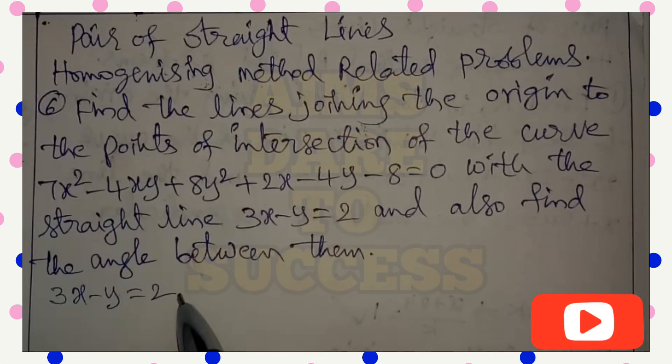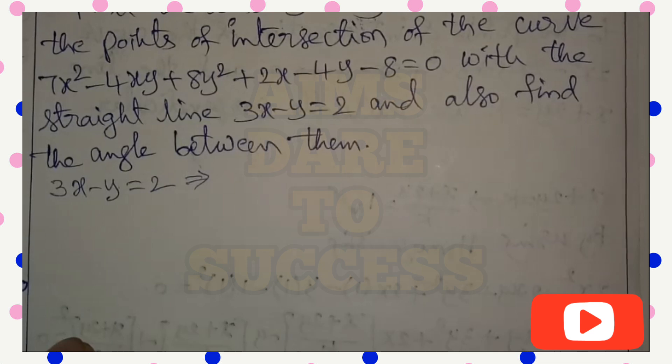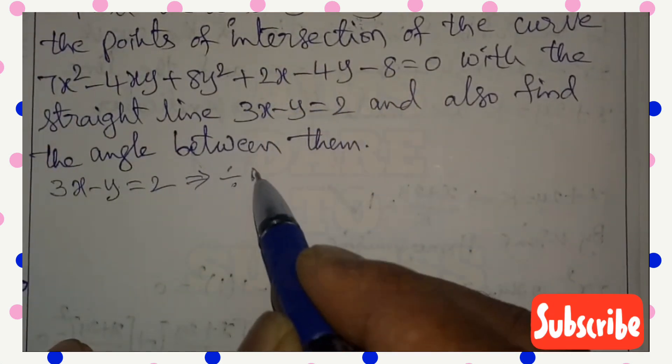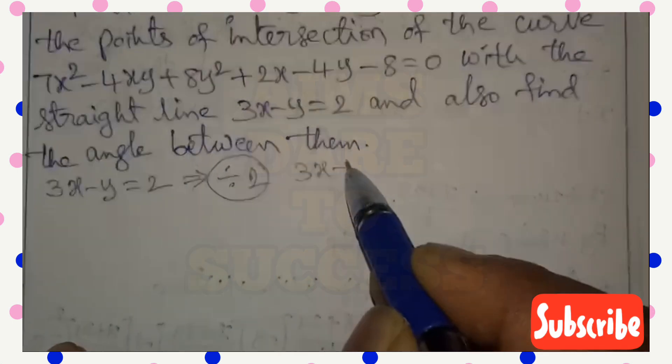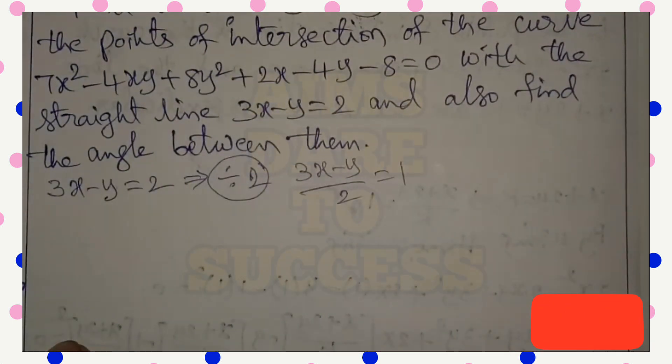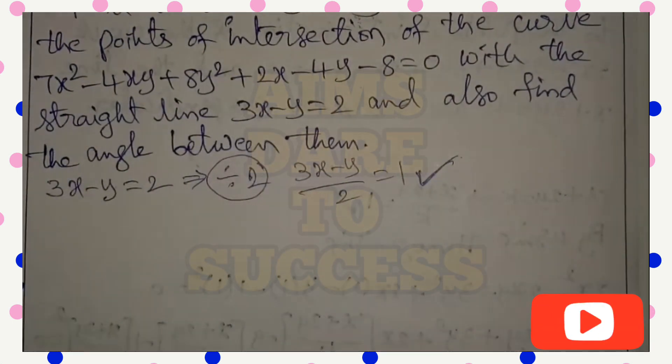According to the problem, given line is 3x - y = 2. But according to concept of homogenizing, right side we should get 1. So dividing by 2 total equation, we get (3x - y)/2 = 1.